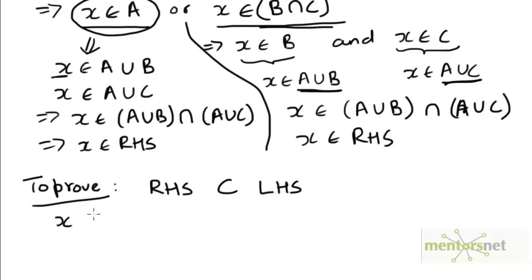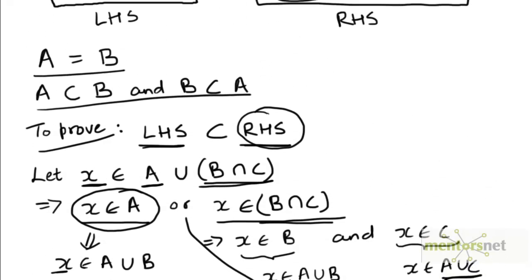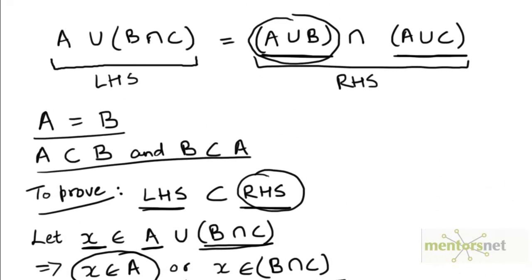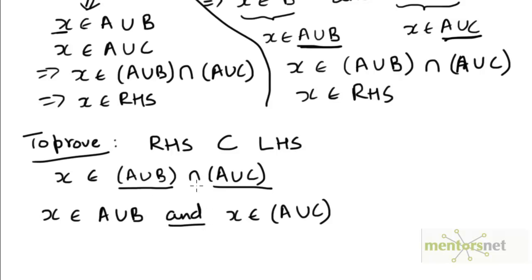Let's draw an arbitrary element from the set on the right-hand side. The set on the right-hand side is A union B, intersected with A union C. So if x belongs to the intersection of these two sets, x must belong to the first set and to the second set by the definition of the intersection operation — x must be a common element of both these sets.